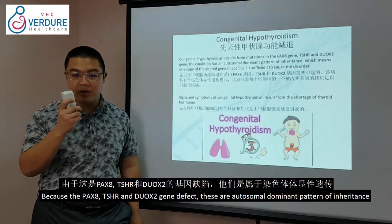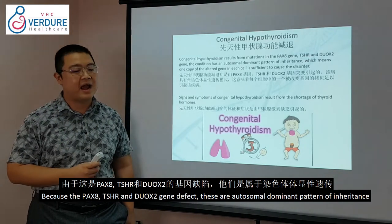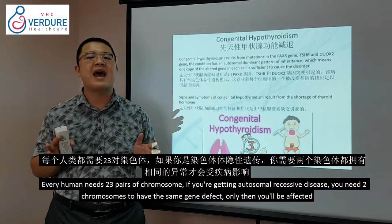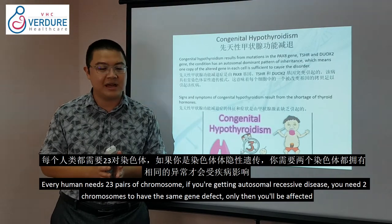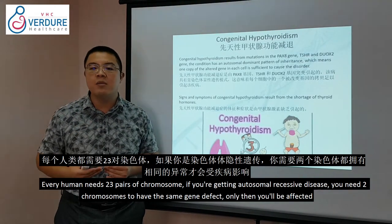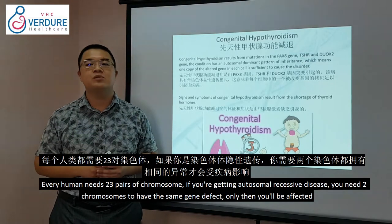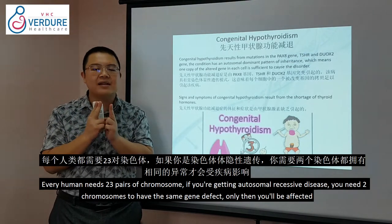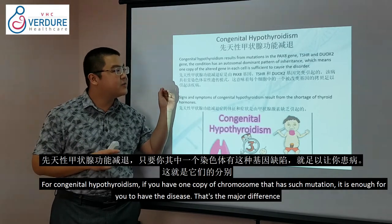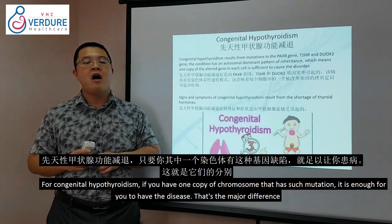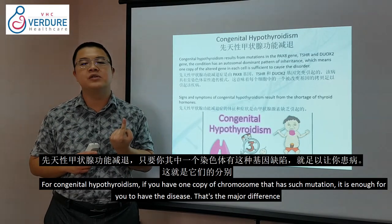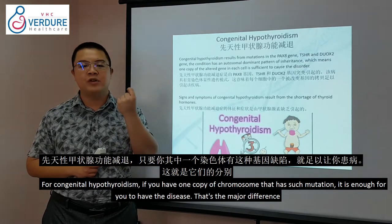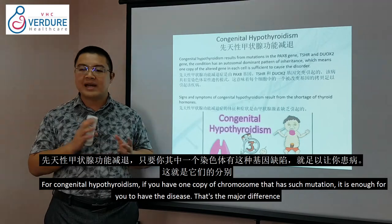This is caused by defects in the PAX8, TSHR, and DUOX2 genes, following an autosomal dominant pattern of inheritance. Unlike autosomal recessive diseases where you need two defective chromosomes, with Congenital Hypothyroidism, getting just one copy of the chromosome with this mutation is enough to have the disease.